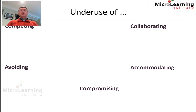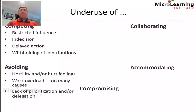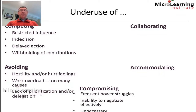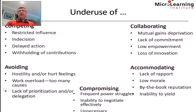Underuse of competing can result in restricted influence, indecision, or withholding of contributions. Underuse of avoiding can lead to hostility, hurt feelings, work overload, and a lack of prioritisation. Underuse of compromising causes frequent power struggles and unnecessary confrontations. Underuse of accommodating results in low rapport and low morale. Underuse of collaborating leads to mutual gains deprivation, lack of commitment to solutions, low empowerment, and a loss of innovation.